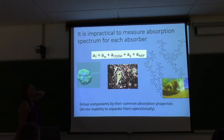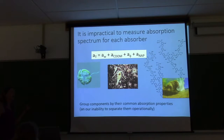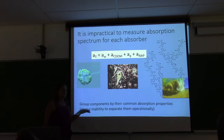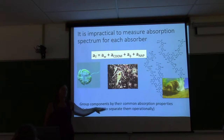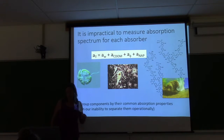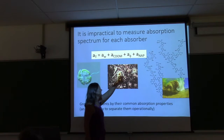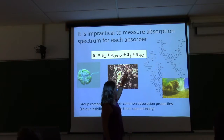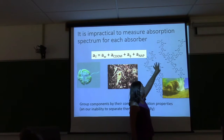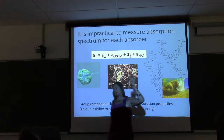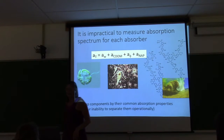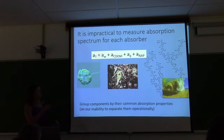It's pretty impractical to measure the absorption spectrum for each individual absorber, so we tend to group components by their common absorption properties. We also group them because of the way we process water samples. If you think about the ocean as being comprised of water, phytoplankton, zooplankton, bacteria, other organic particles, inorganic sediments, and dissolved organic molecules — you can add all their absorption spectra up and get the total. So let's start with water.